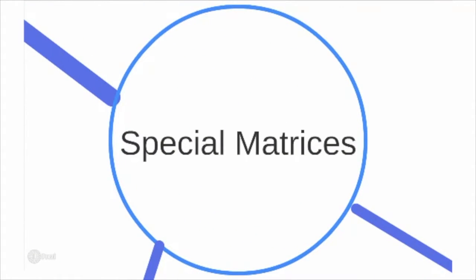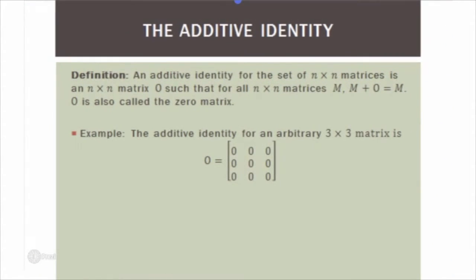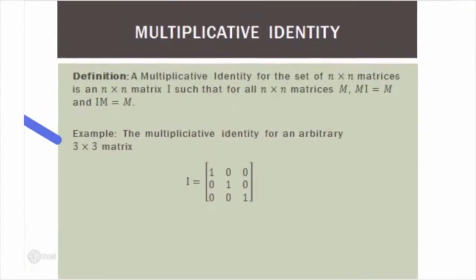Now we'll look at special types of matrices. The additive identity for the set of n by n matrices is an n by n matrix 0 such that for all n by n matrices M, M plus 0 equals M. It's also called the zero matrix. The additive identity for an arbitrary 3 by 3 matrix is the all-zeros matrix, because adding it to any 3 by 3 matrix just gives back that matrix. You can prove that this is the additive identity and that it is unique.